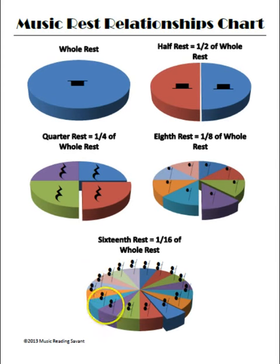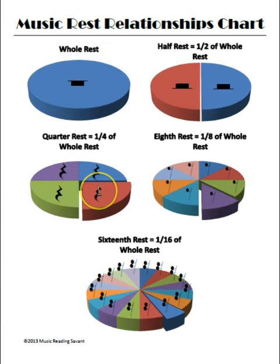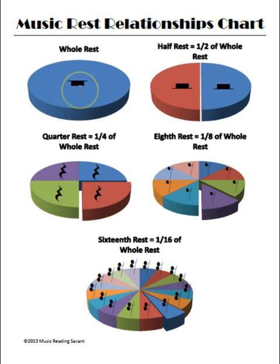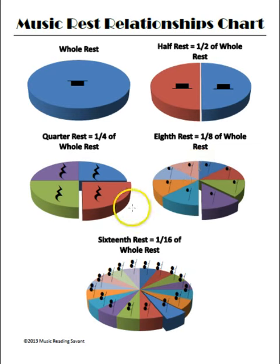This large piece of the pie all equals a whole rest, or four counts. So we need two half rests to equal a whole rest, four quarter rests to equal a whole rest, eight eighth rests to equal a whole rest, or sixteen sixteenth rests to equal a whole rest. Now you know how these rests got their names — it all comes from the whole rest.